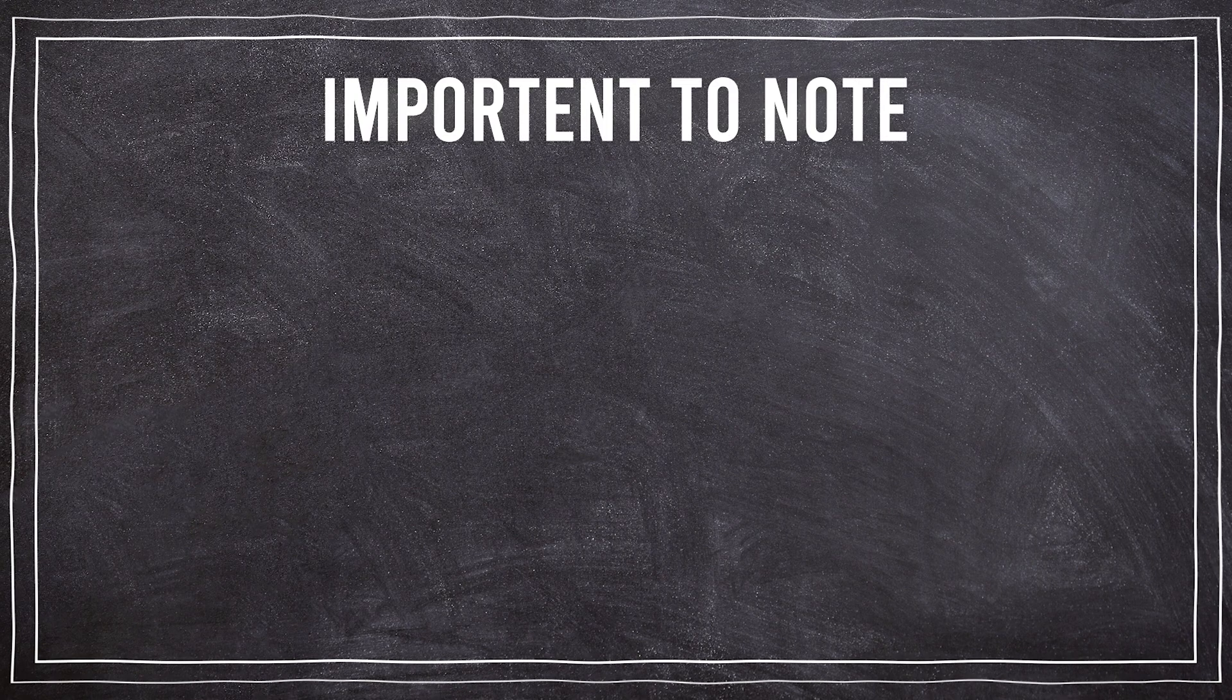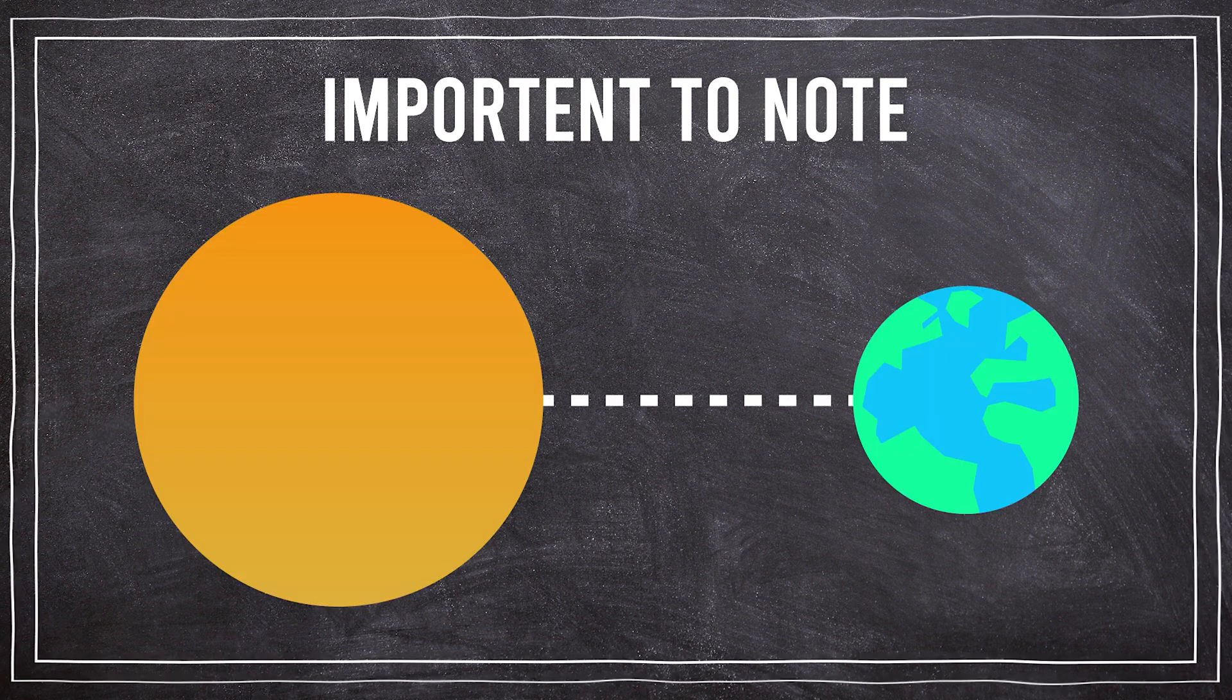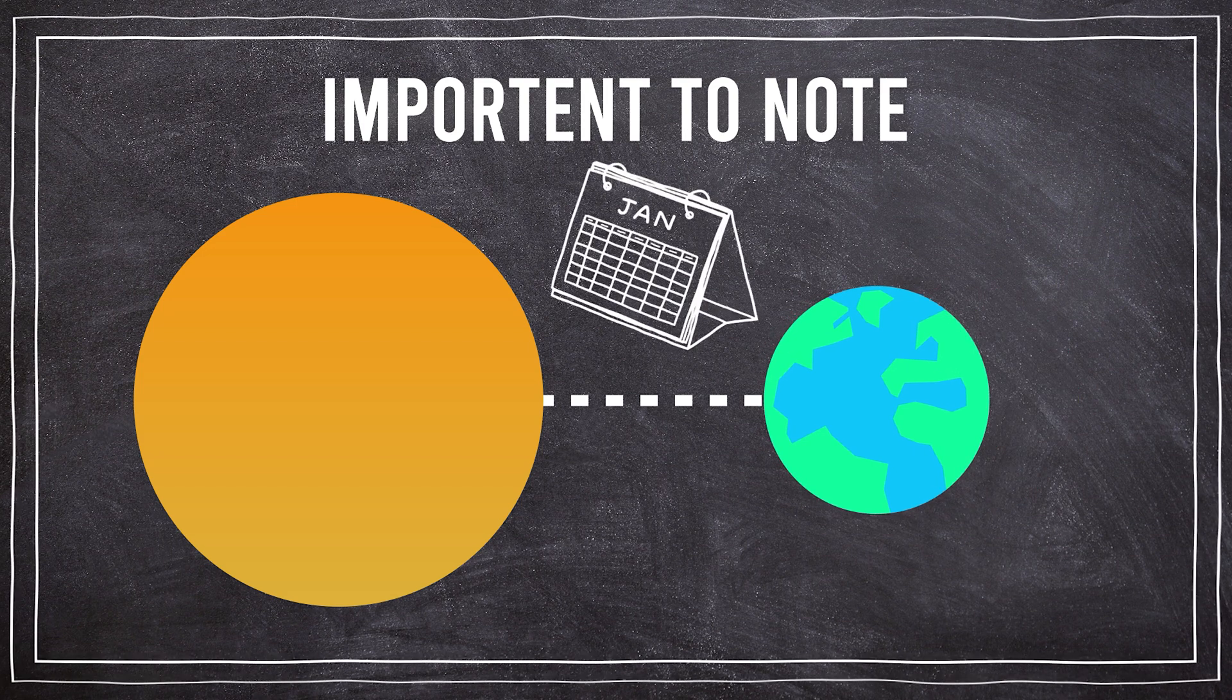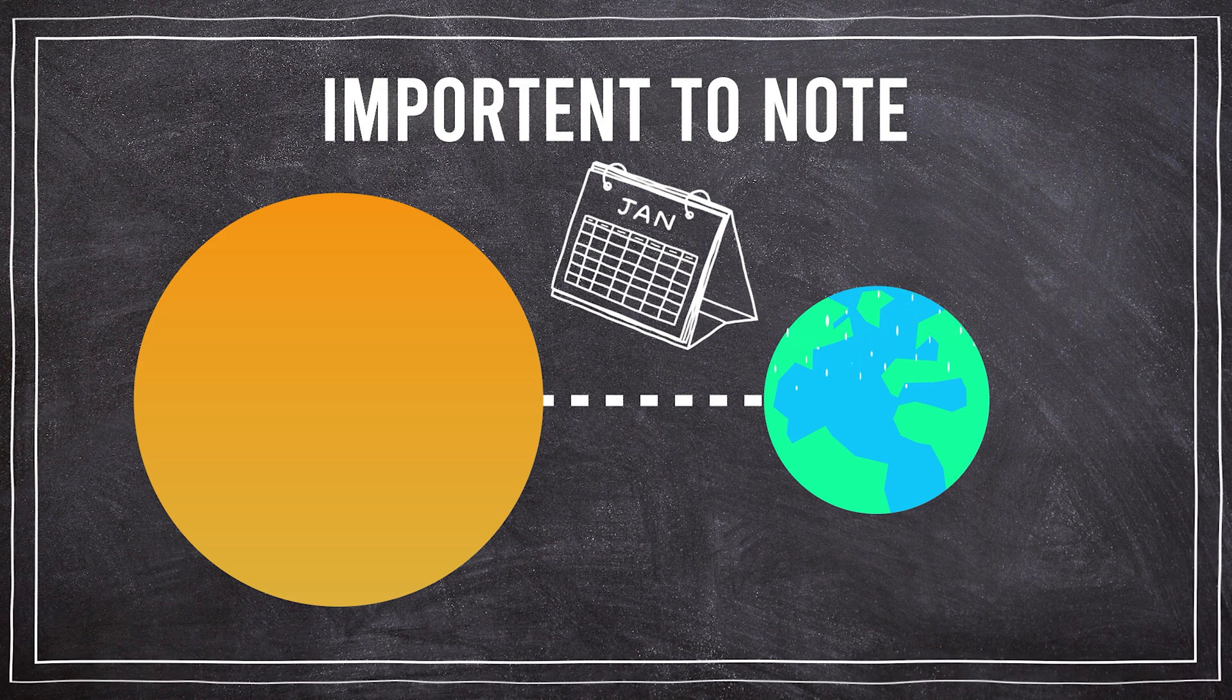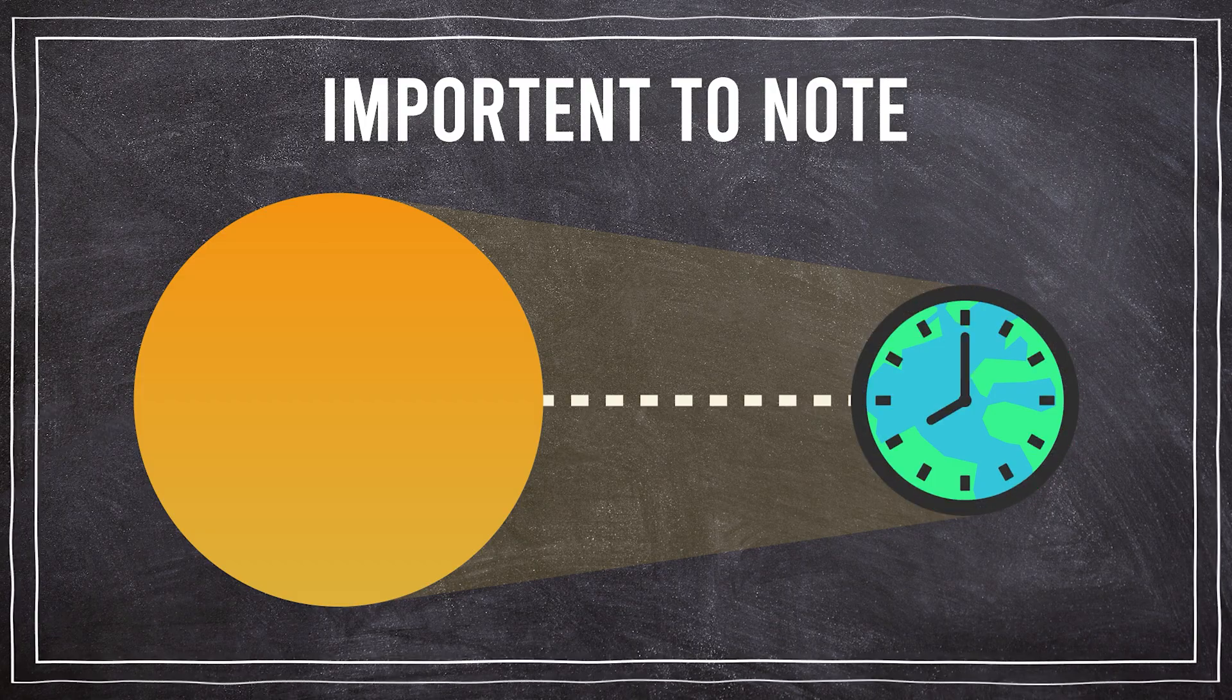It's important to note that the distance between the Earth and the Sun does not cause the seasons. In fact, the Earth is closest to the Sun in early January, during the northern hemisphere's winter. The key factor is the angle of sunlight and the length of daylight hours.